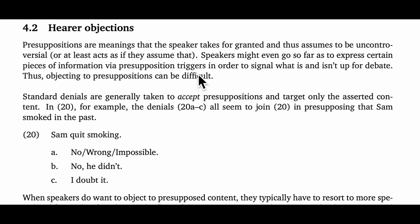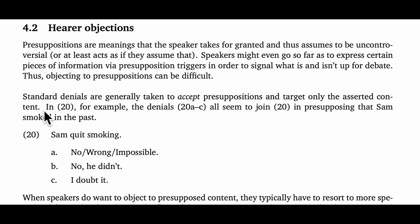Let's move now to the second set of discourse observations, which relate to hearer objections to presupposed content. Presuppositions are meanings that the speaker takes for granted and thus assumes to be uncontroversial — or at least they're acting as if they assume that. As a result, speakers might even express certain pieces of information via presupposition triggers in order to signal what is and isn't up for debate. Objecting to presuppositions can be difficult, and the crux of this is that standard denials are generally taken to just accept the presuppositions and target only the core semantic content. For example, if I say 'Sam quit smoking' and you want to object that Sam never smoked in the past, you can't just say 'no,' 'wrong,' 'impossible,' 'no he didn't,' or even 'I doubt it.' All these utterances will be construed as accepting that he smoked in the past and denying that he isn't smoking now.